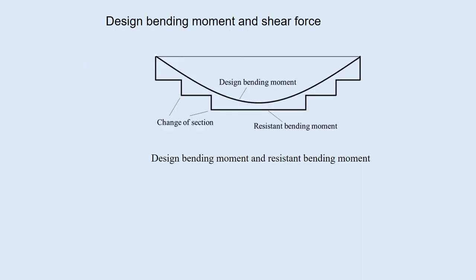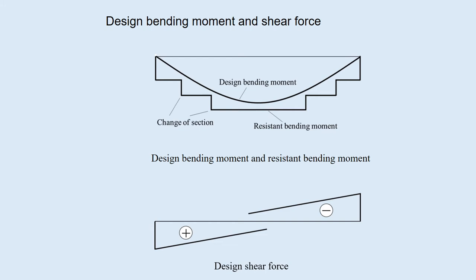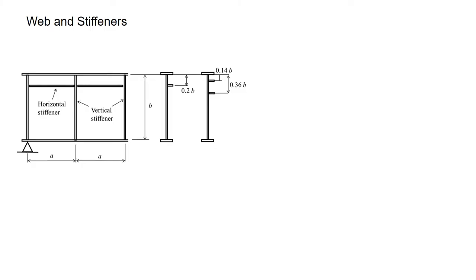The design bending moment M is maximum at the center and decreases towards the end supports. The girder sections change along the span corresponding to this design bending moment diagram. In general, the web height is constant, but the flange thickness and the steel grade vary along the span. The resistance bending moment becomes a step figure. This is the design shear force diagram, which has maximum and minimum values near the end supports. The web thickness and height is a dominant factor affecting structural performance, economy, and appearance.